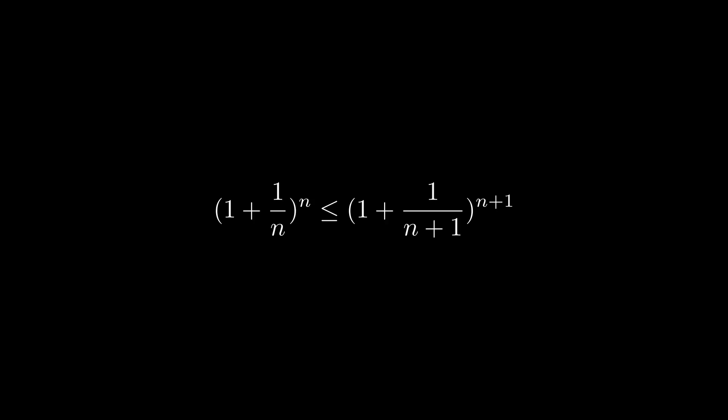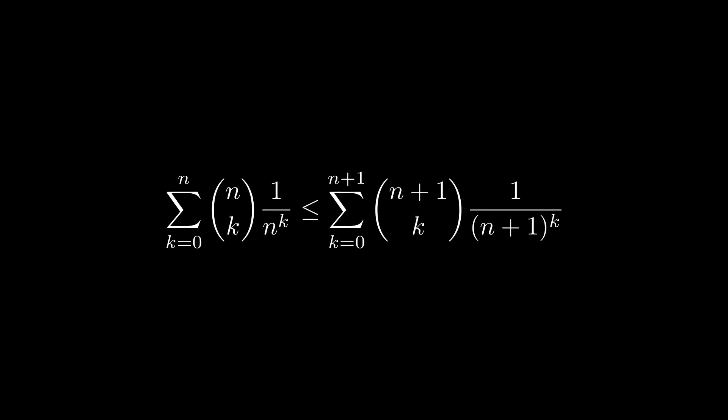Let's expand both sides using the binomial theorem. Our strategy to prove this inequality consists of making a slightly stronger claim. Let's discard the final n plus 1 term from the right side, and claim that even without that term, the left side is still no bigger than the right. Now that our two sums range over the same values of k, we can actually prove this inequality by showing it term by term.